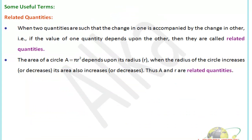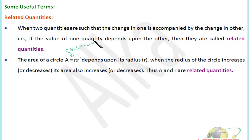Let's discuss what are related quantities. The term itself implies there is a relation. When two quantities are such that the change in one is accompanied by the change in the other, or the value of one quantity depends upon the other, they are called related quantities. For example, the area of a circle is πr². Here π is a constant and r is a variable. If r increases, area increases; if r decreases, area decreases; if r is doubled, area will be four times; if r is halved, area will be one-fourth. So area and radius are related quantities.